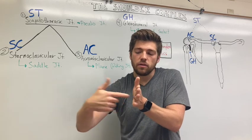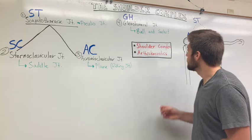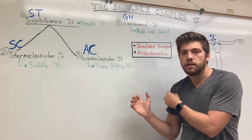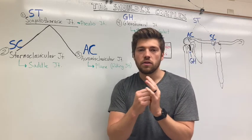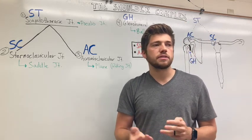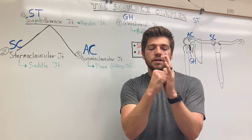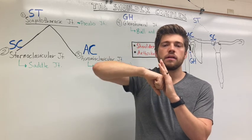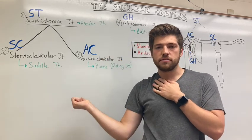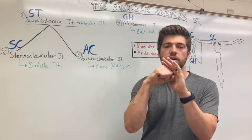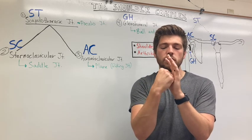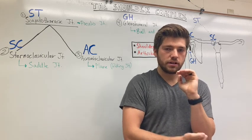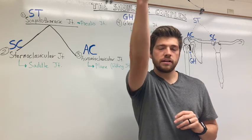The glenohumeral joint is between the glenoid and the humeral head, and it functions just like a regular ball and socket. You apply the convex-concave rule. For abduction, it's going to be a roll up and a slide down. For external rotation, it's going to be a roll posterior and a slide anterior. And then opposite for internal rotation. For flexion and extension, it's primarily going to be a spin in the medial-lateral axis.